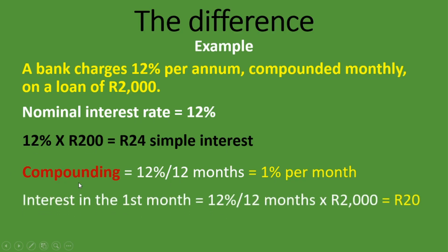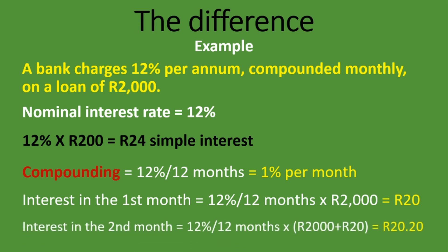If we are paying 1% per month, the interest in the first month will be 12% divided by 12 months times 2,000 rand — meaning in the first month we incur interest of 20 rand. In the second month, interest is calculated on 12% divided by 12 months times 2,000 plus the 20 rand from month one — giving 20 rand 20 cents. You can see it's piling up: we pay interest on the loan of 2,000 rand plus interest on the interest already incurred. That is what compounding means.